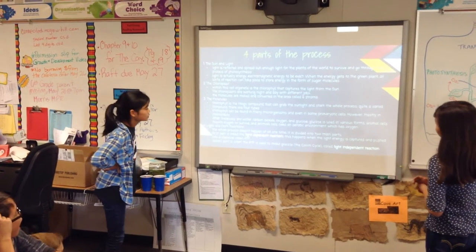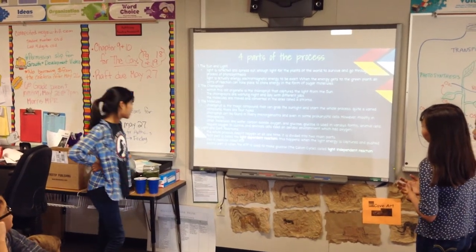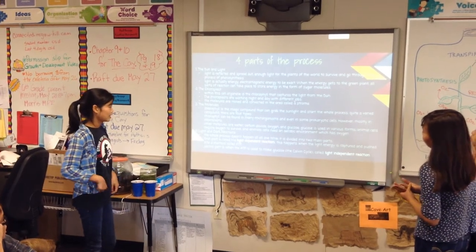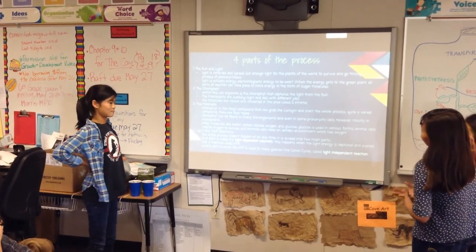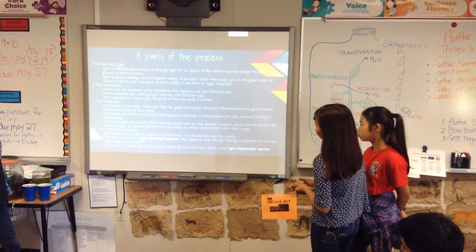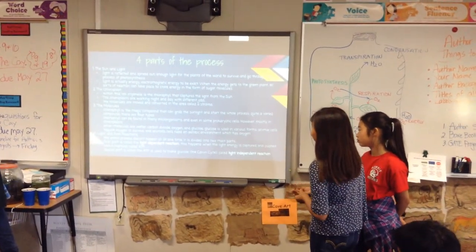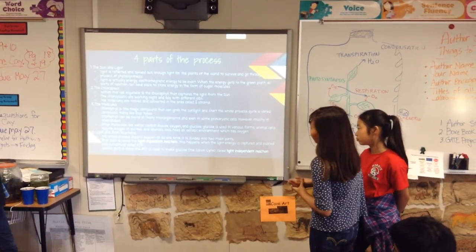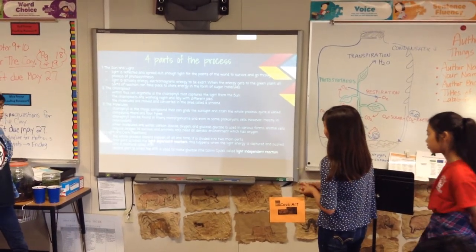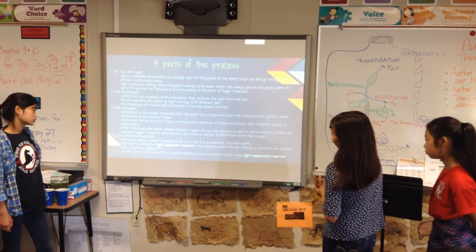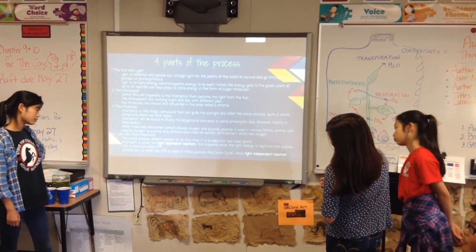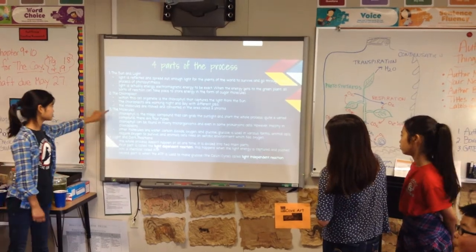Glucose is used in various forms. Animal cells require oxygen to survive, and animals themselves need an aerobic environment which has oxygen. The whole process is divided into two main parts. The first is called the light-dependent reaction, which happens when light energy is captured and pushed into a chemical called ATP. The second part is when ATP is used to make glucose — the Calvin Cycle, called the light-independent reaction.